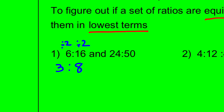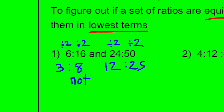For 6 to 16, we divide both terms by 2 and get 3 to 8. For 24 to 50, we divide both terms by 2 and get 12 to 25. Both ratios are now in lowest terms, and as you can see, they're not the same ratio — they're actually pretty close, but not the same. So we would say they are not equivalent.